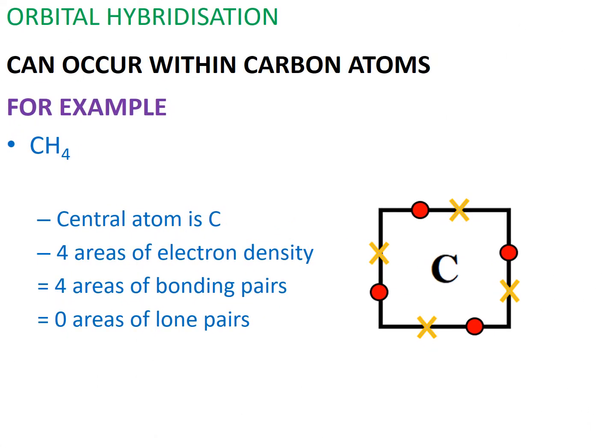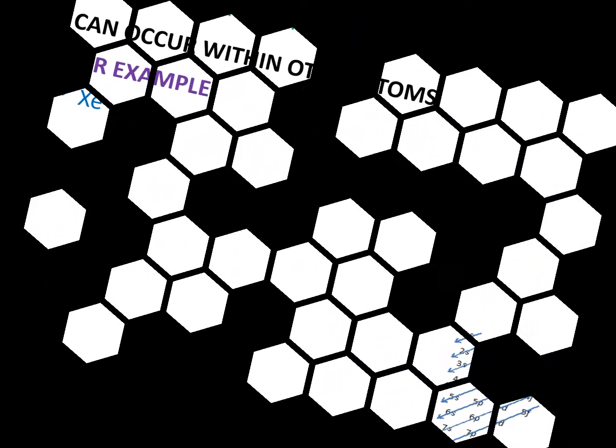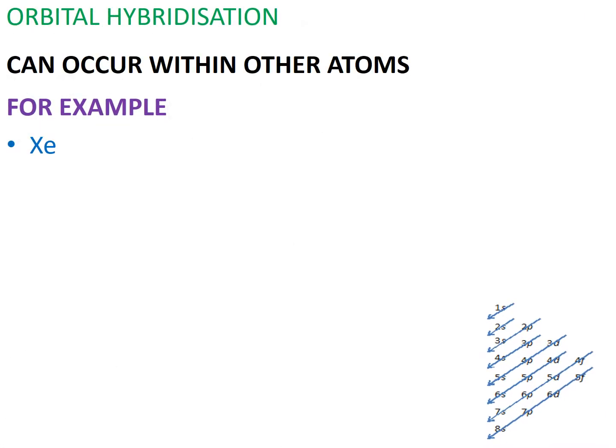Furthermore, if you look at the central atom's electronic structure, you'll see that carbon has four areas of electron density, four areas of bond pair electrons, and zero areas of lone pair electrons.